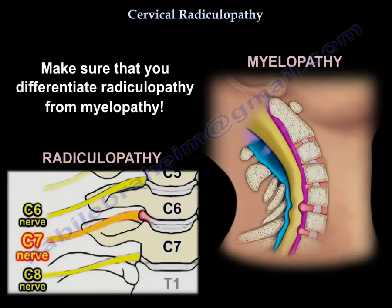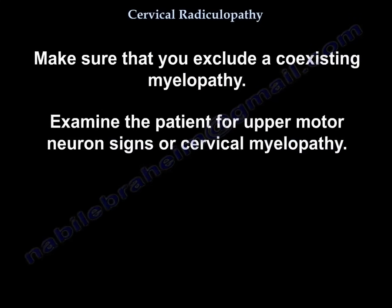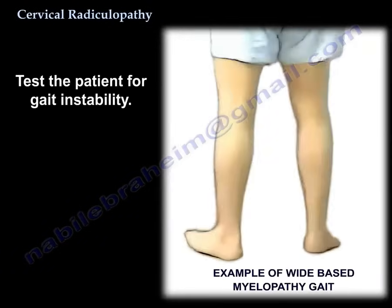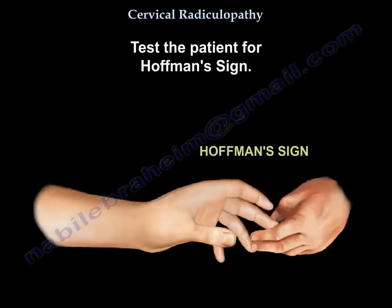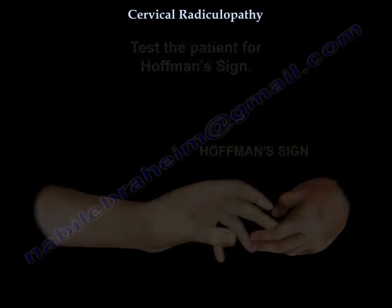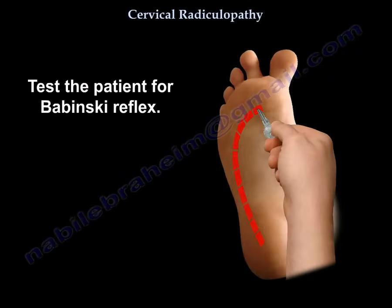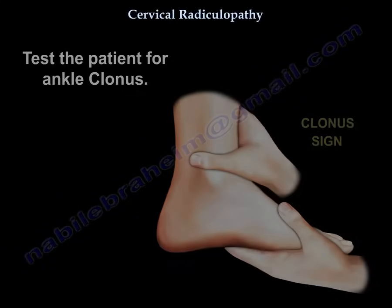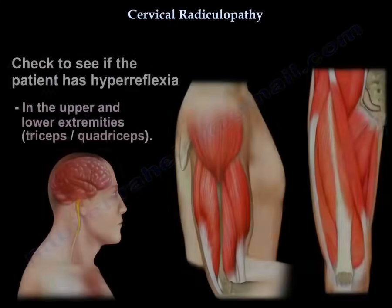Make sure you differentiate radiculopathy from myelopathy and exclude a co-existing myelopathy. Examine the patient for upper motor neuron signs or cervical myelopathy. Test for gait instability, the Hoffmann sign, Babinski sign, clonus, and hyperreflexia.